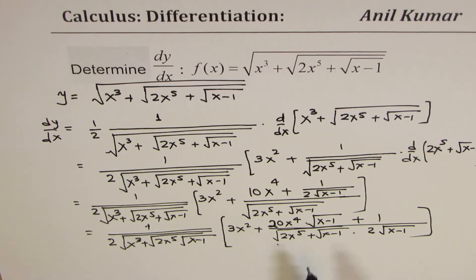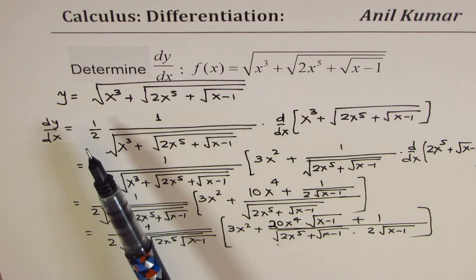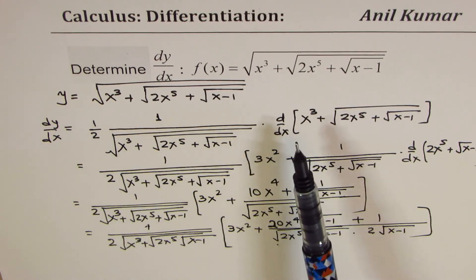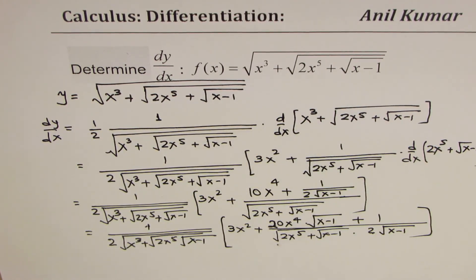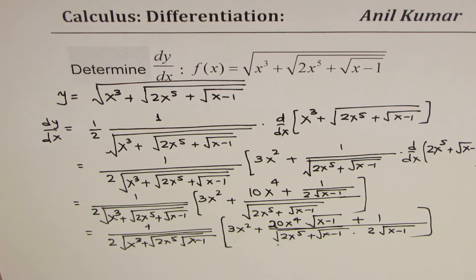The key idea is: whenever you have nested roots, multiply by the derivatives of the inside terms, applying the chain rule at each level to get the result. I hope the process is clear. Feel free to share your comments, and if you like and subscribe that'll be great. Thank you and all the best.